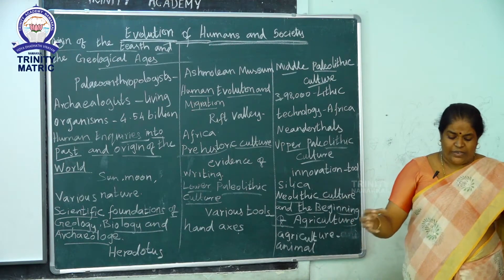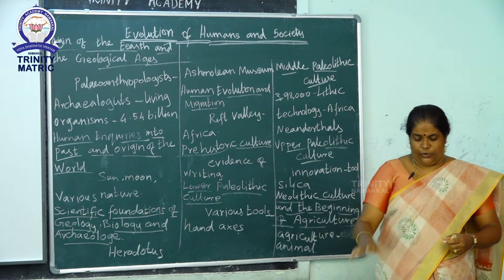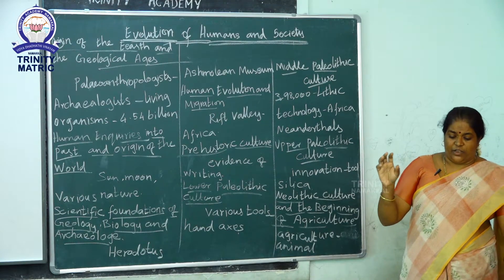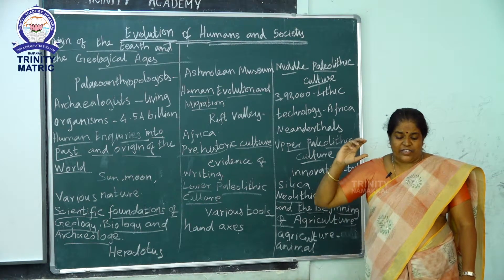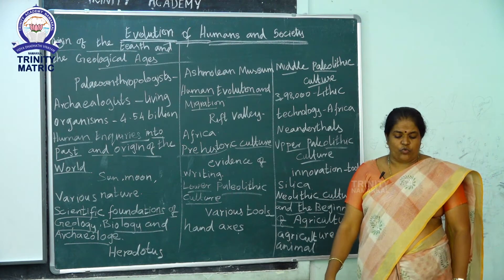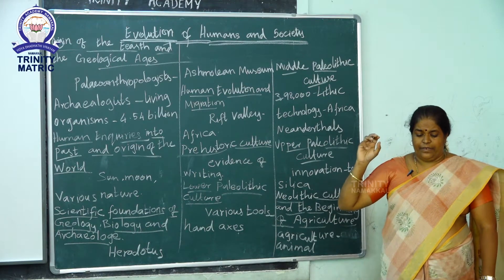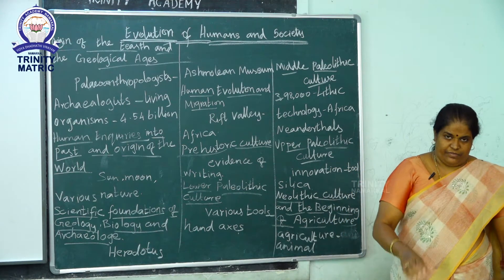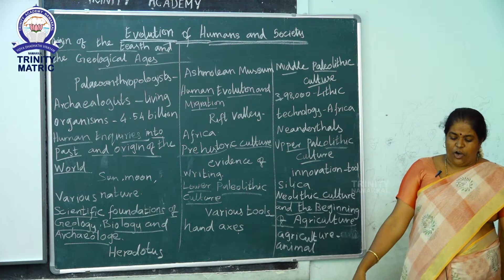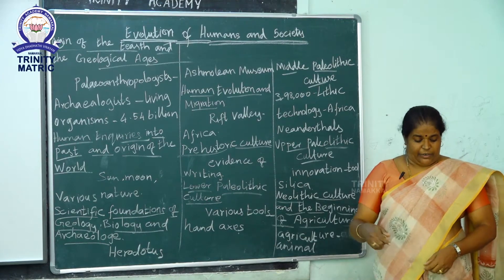In prehistoric Tamil Nadu, during the Lower Paleolithic period, human ancestors called Hominids made some of the oldest stone age tools in the world. These stone tools were found near Chennai. The first discovery of Paleolithic tools was at Pallavaram, near Chennai. These people did not have knowledge of iron or pottery making.